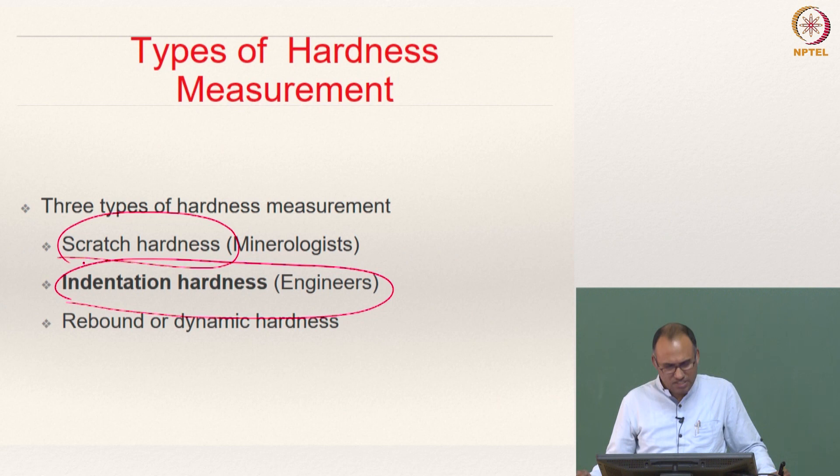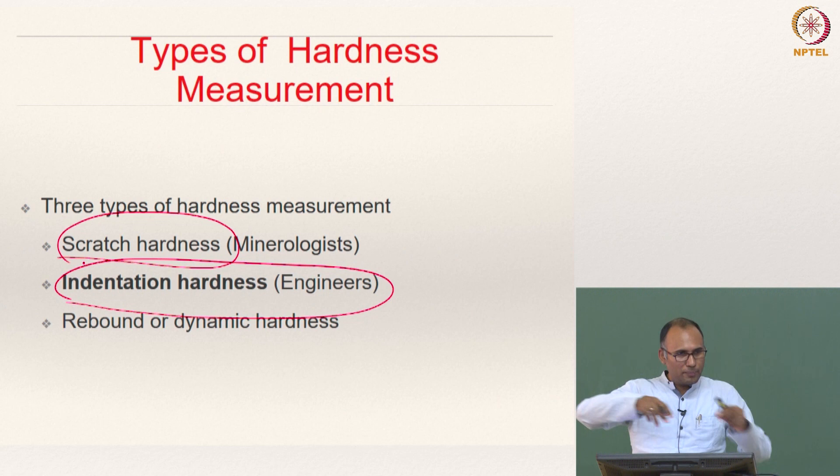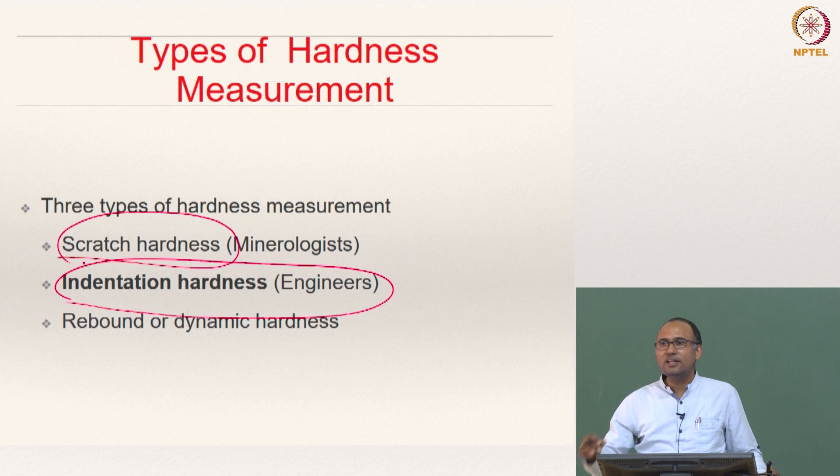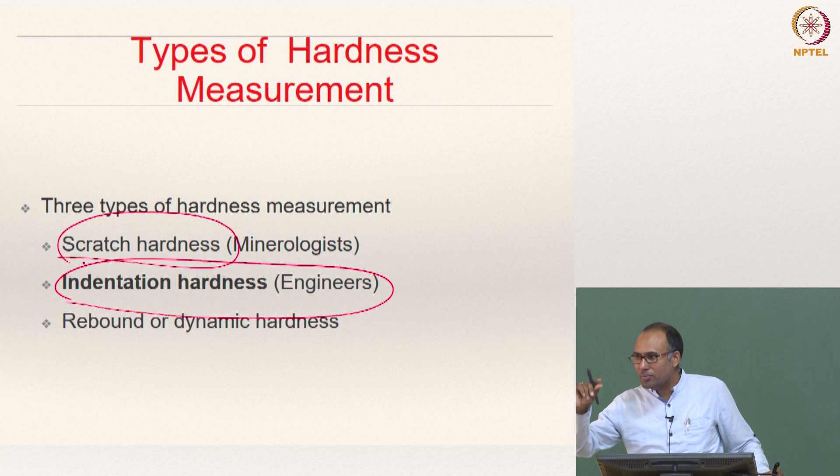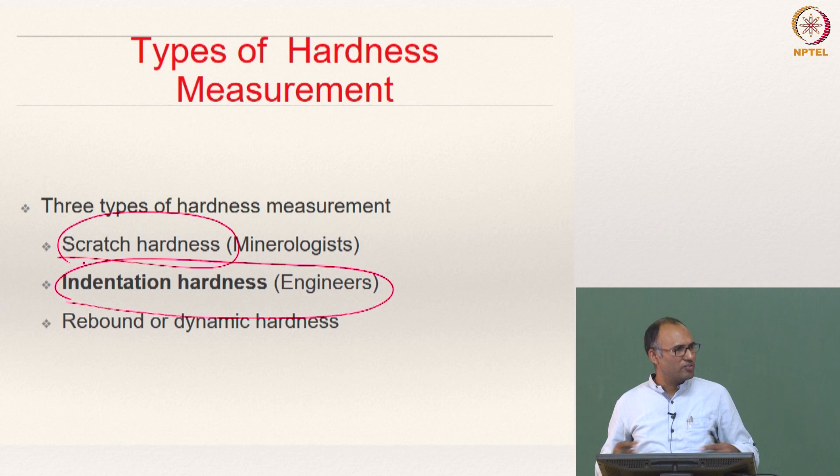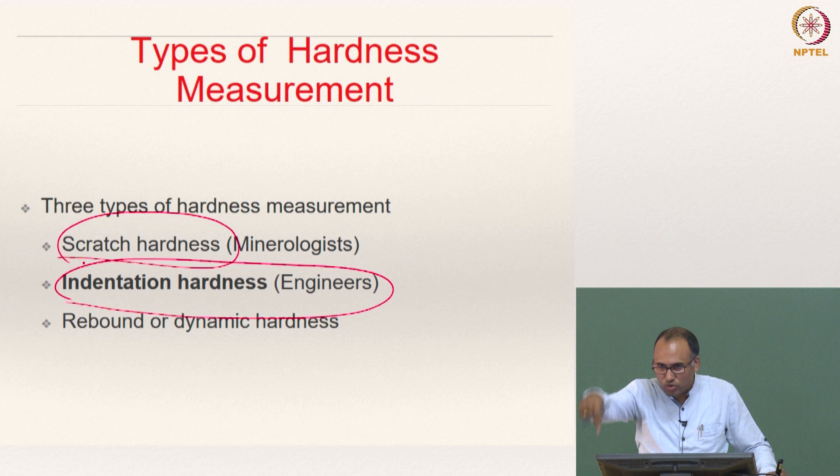For us, it is indentation hardness. That means you take a material and indent it using an indenter. Then you look at the depth of indentation. If it is a hard material, your indentation depth is going to be small, and if it is a soft material, your indentation depth is going to be large. That is something we can relate to even without doing an experiment. If you take a sponge and a rock, obviously if you indent the sponge it goes in. The depth of indentation increases for soft materials.